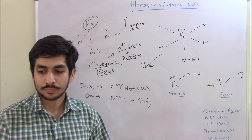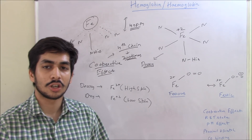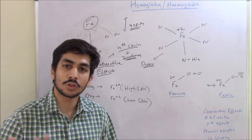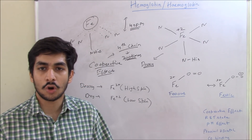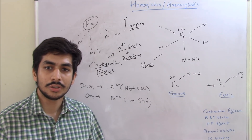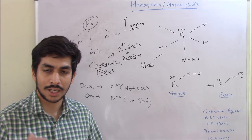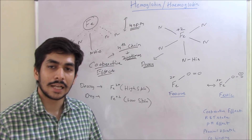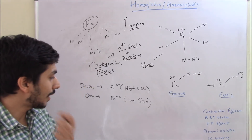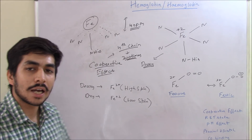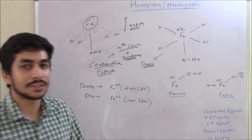This is very important from an exam perspective — the fourth oxygen binds 300 times faster. The same is true in reverse: if hemoglobin is in the oxy form and one chain loses oxygen, there's a conformational change and all chains start losing oxygen rapidly, with the last one losing oxygen the fastest. This is known as the cooperative effect. Next we discuss the R and T states — the relaxed and tense states.